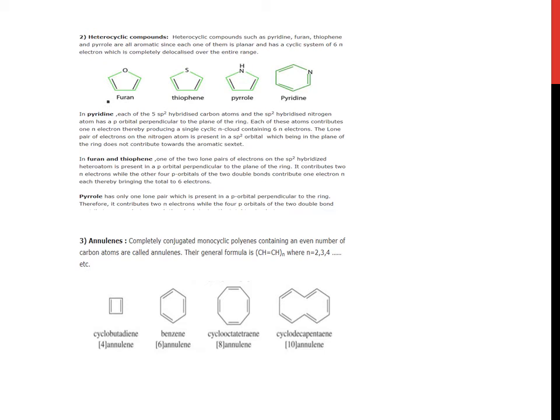In furan and thiophene, one of the two lone pairs of electrons on the sp2 hybridized heteroatom is present in a p orbital perpendicular to the plane of the ring. It contributes 2 pi electrons, while the other 4 p orbitals of the 2 double bonds contribute 1 electron each, thereby bringing total of 6 electrons.